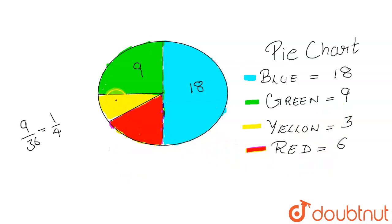And this will be my red, 6. I can also name them in this pie chart also: blue, green, yellow and red.